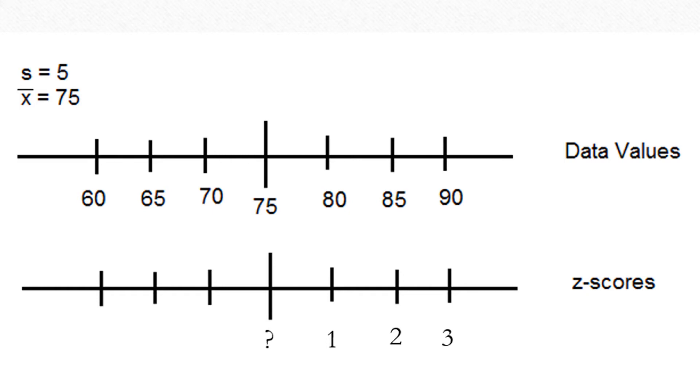What do you think the Z score would be for the mean piece of data 75? If you said 0, you're correct because 75 is 0 units away from itself. What about the data values that are lower than the mean? If you guess that we're going to use negative values to represent the Z scores for those data values, you're correct.